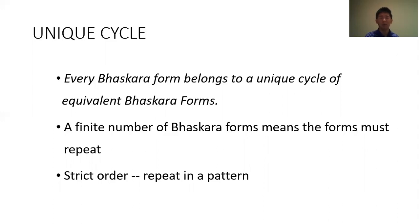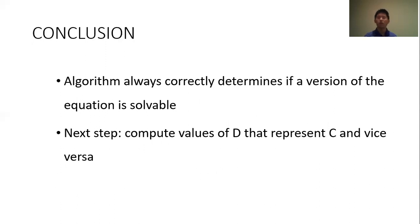So in conclusion, this algorithm does always correctly determine if the version of the equation is solvable because the forms are equivalent or not. And the next step of my research is maybe using this algorithm, maybe not, to be able to compute values of D and C that form a solvable equation without having to run this algorithm every time to make that determination. So like using some kind of algebraic computation method to just generate values of D that represent C or generate values of C that are represented by a certain D.